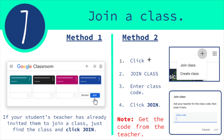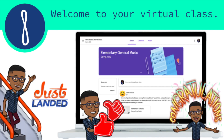Here is how you join using method two. Step one: click the plus sign at the top of the screen next to the Google Apps Launcher. Click the plus sign, then click Join Class. Once you click Join — step eight — welcome to your virtual classroom. You are now free to move about the classroom.